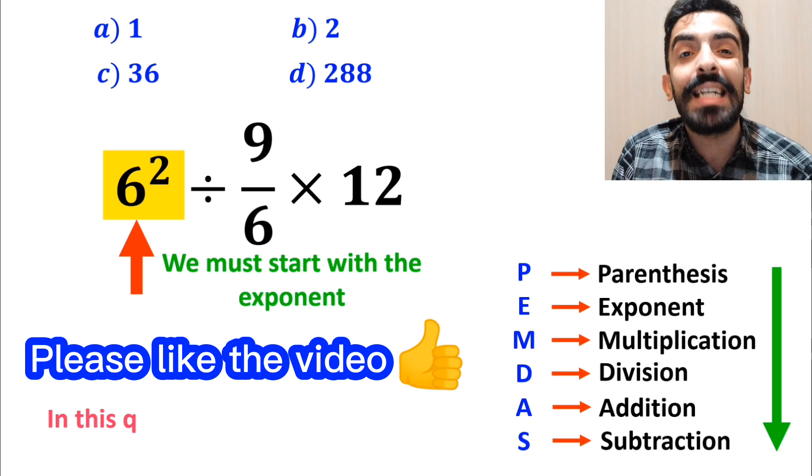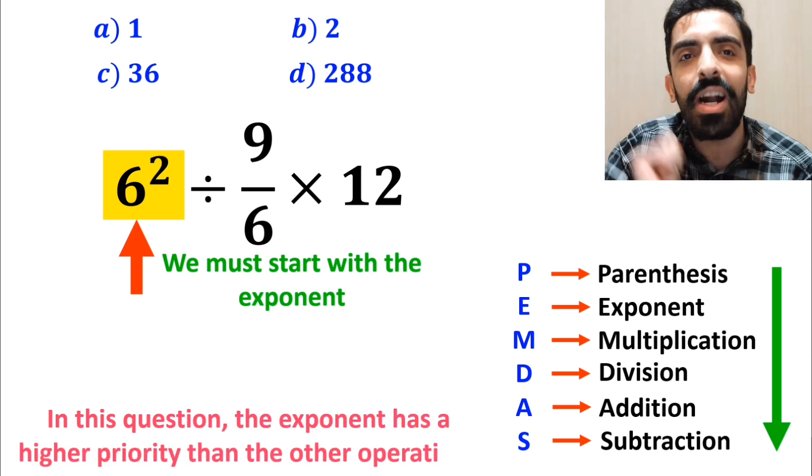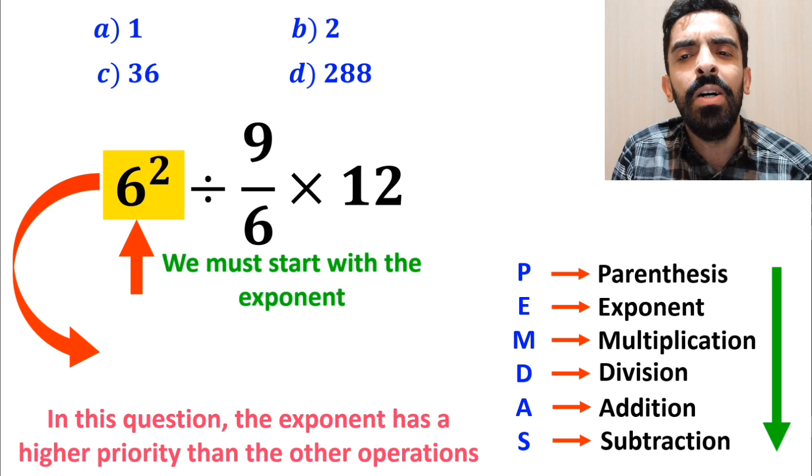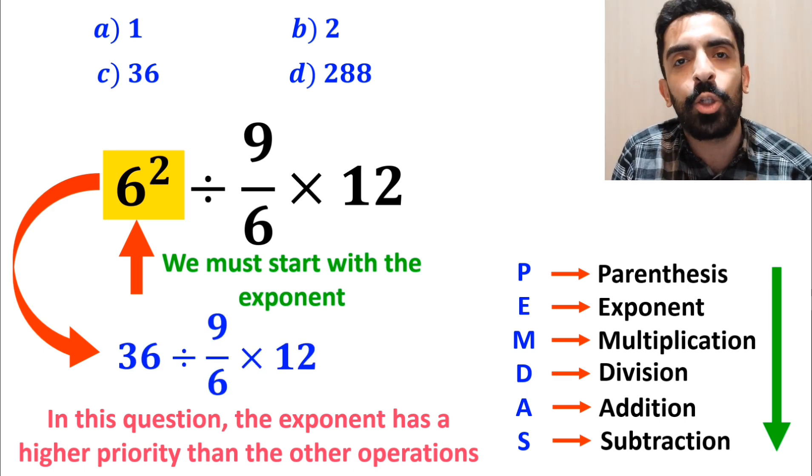First we must start with the exponent, because in this expression, exponent has a higher priority than the other operations. So, instead of this expression, we can write 36 divided by 9 over 6 multiplied by 12.